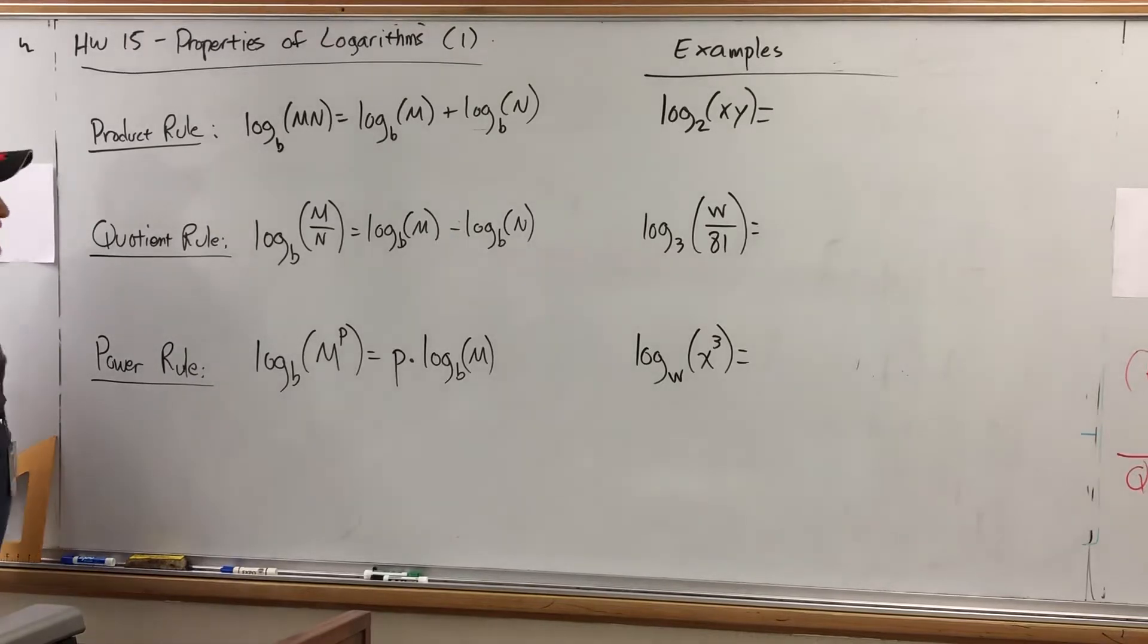The properties in this section actually have specific names. One of them is called the Product Rule, so it's a rule about products. One is called the Quotient Rule, so it's a rule about quotients, aka division problems. And one is called the Power Rule, because it's a rule about powers.